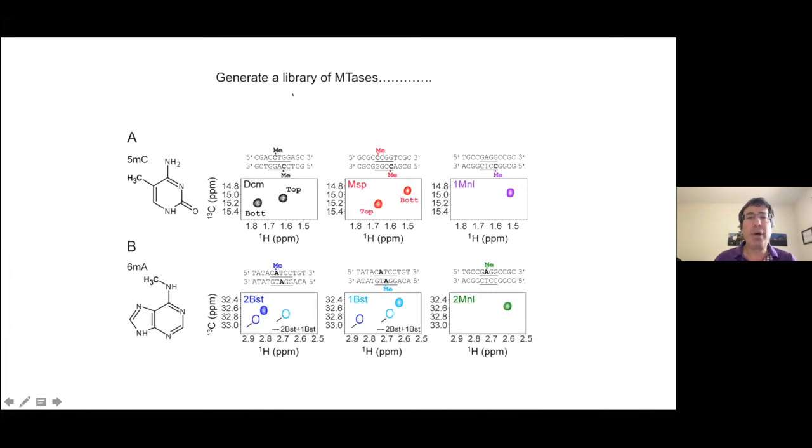What we've done is we've generated a library of various methyltransferases. Various enzymes shown here are three enzymes, DCM, MSP, and 1ML, that are going to affix a C13H3-methyl group to cytosine, indicated here. And we also have the corresponding methyltransferases, which do the same thing, but with A, with the N6 position in A.